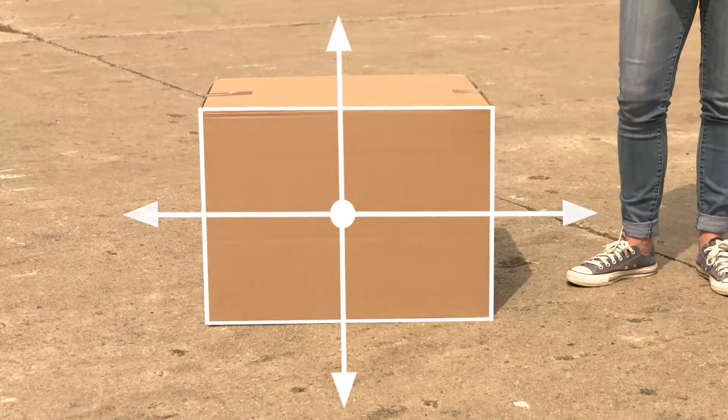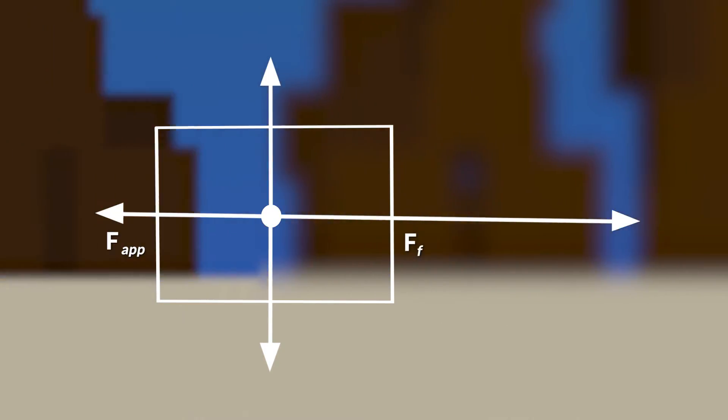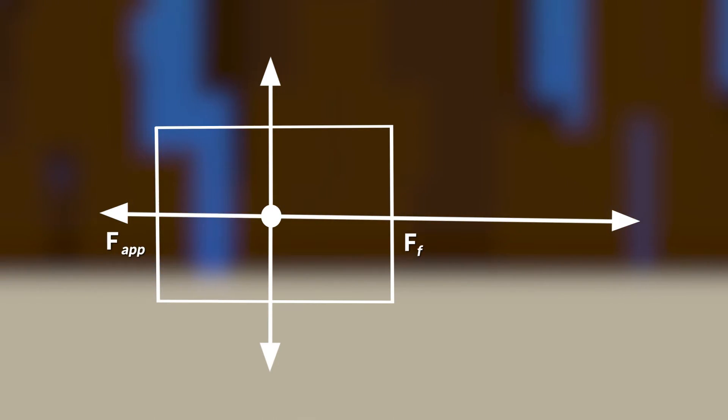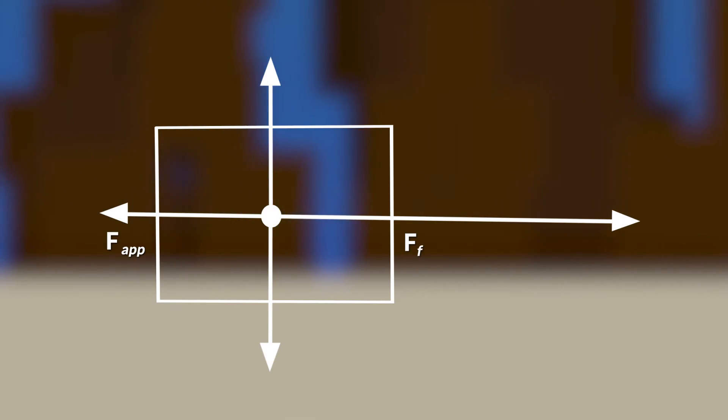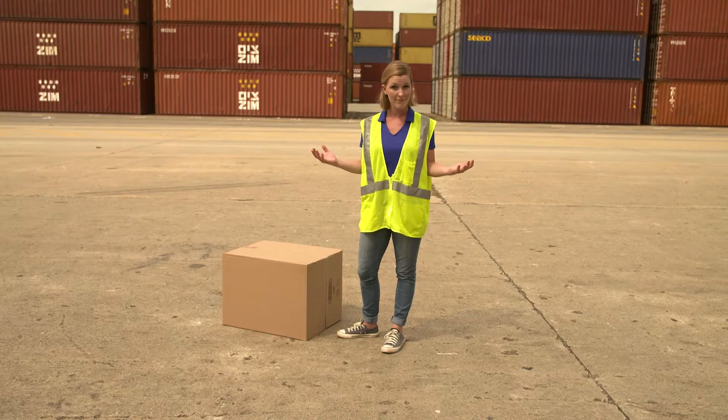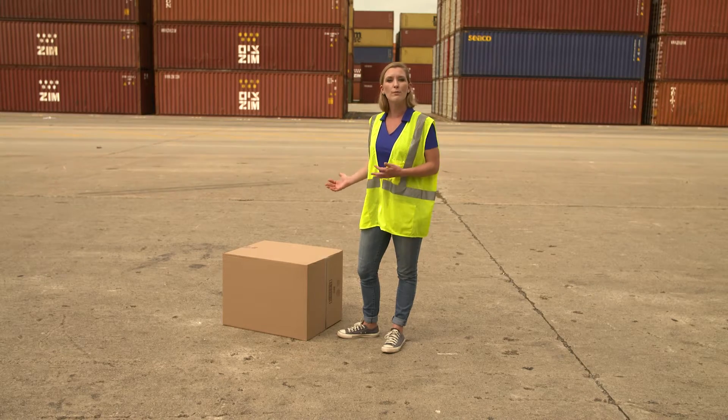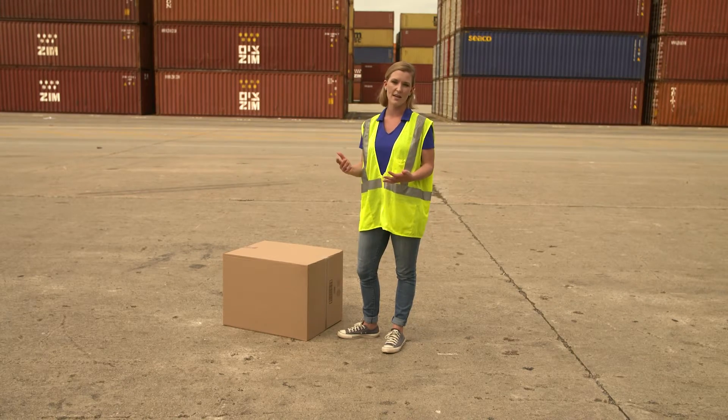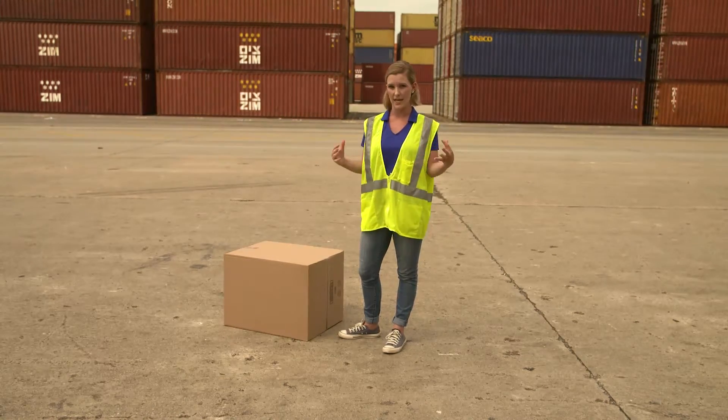Now what if the box is slowing down? The frictional force would be greater and the arrow would be longer than the applied force arrow. What if the frictional force and the applied force are the same? The box would either be at rest or it would be moving at a constant velocity and the arrows would be the same length.